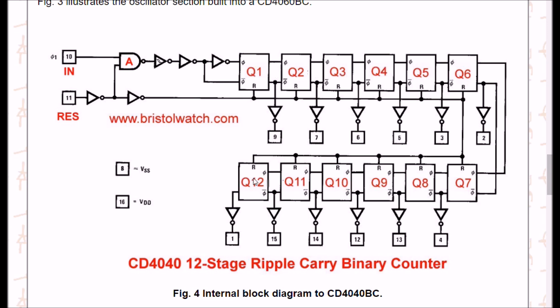It's Q1 through Q7 on the first section. The frequency input is on pin 10, and pin 11 is reset. If you take reset high, it's going to create a low, disable the input, invert to a high, and clear all the outputs of all 12 flip-flops to zero. You notice it has a little buffer connected to each bit, and it also has a Schmitt trigger input to clean up your waveforms going in.